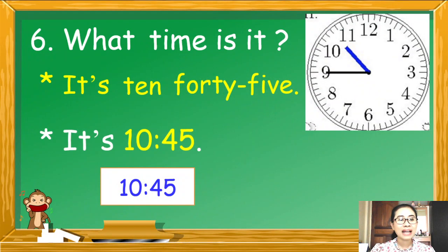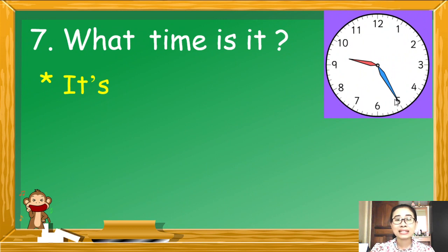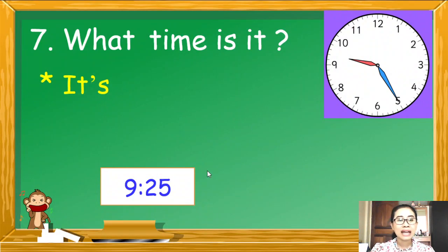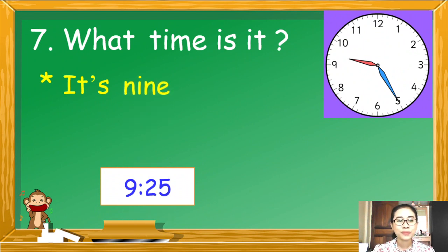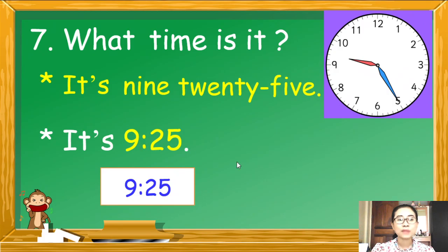Very good. อีกรูปแบบหนึ่งค่ะ It is แล้วตามด้วยตัวเลขได้เลยนะคะ. Number 7: What time is it? เวลาเท่าไหร่ค่ะ? เข็มสั้นอยู่ระหว่างเลข 9 กับเลข 10 แต่ยังไม่ถึงเลข 10 ดังนั้นตอบเลข 9 เข็มยาวชี้เลข 5 เป็นเวลา 25 นาที เขียนได้คือ 9.25.